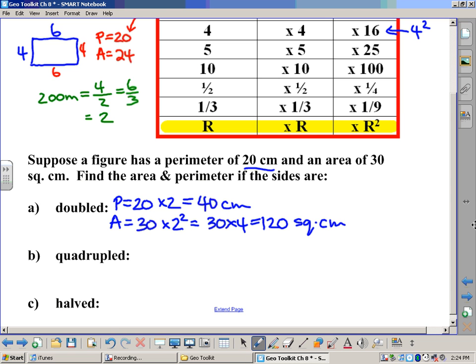If we were to quadruple the sides instead, the perimeter was 20. We'd go ahead, quadruple means multiply by 4, so we'd multiply by 4. The new perimeter would be 80 centimeters. And the area would be the original area, but instead of multiplying by 4, we multiply by 4 squared. So 30 times 4 squared, well, 4 squared is 16, so it's really 30 times 16. That ends up being 16 times 3 is 48. Add on the 0, you get 480, and that would be square centimeters.